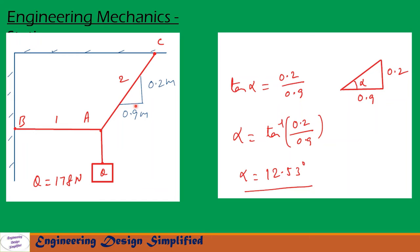Now let us find the angle made by string AC with the horizontal. The slope is given as 0.2 meters vertical and 0.9 meters horizontal. Let us draw a right angle triangle with these sides. Let us call this angle alpha. So tan alpha equals 0.2 by 0.9, giving alpha equal to 12.53 degrees. So string AC makes an angle of 12.53 degrees with the horizontal.